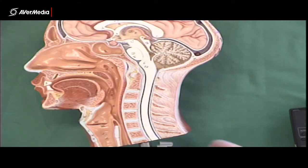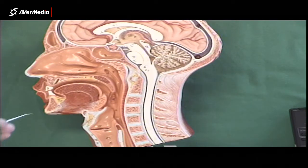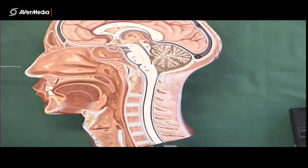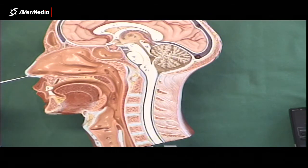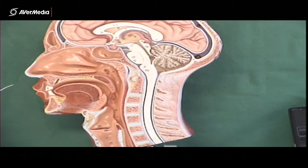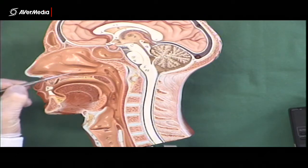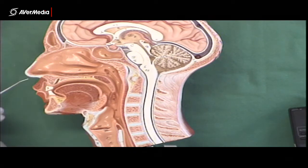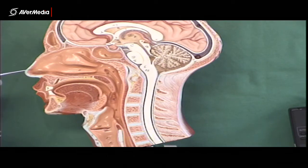Looking at a mid-sagittal section seen from a lateral point of view. We've got the respiratory system to look at. Here we're looking at the nasal cavity, and the first part — the entryway — is the nasal vestibule.